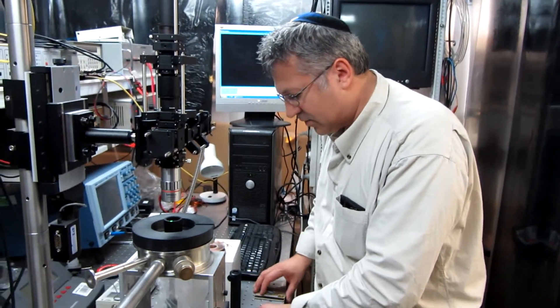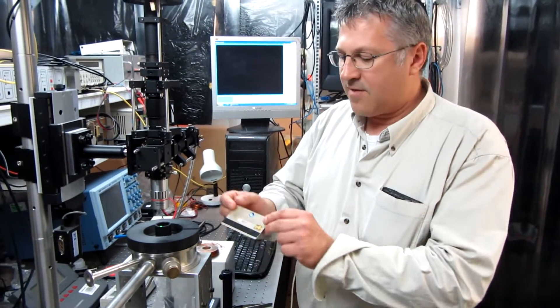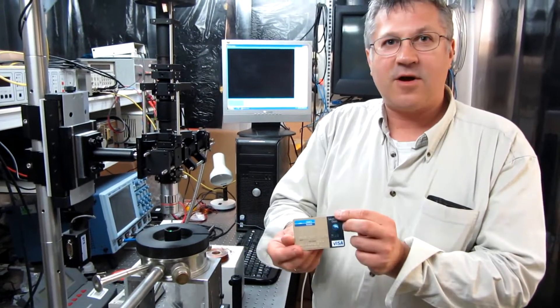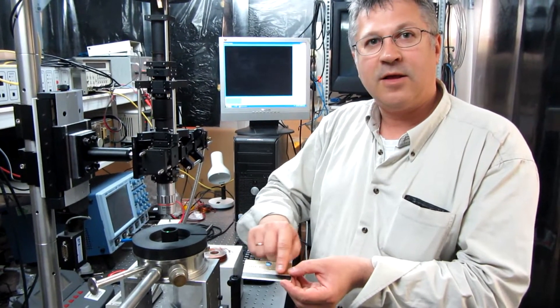So for demonstration purposes, we will now show you how this works. We have a credit card here, a Visa card. And what we want to do is to look at the magnetic pattern in the credit card.